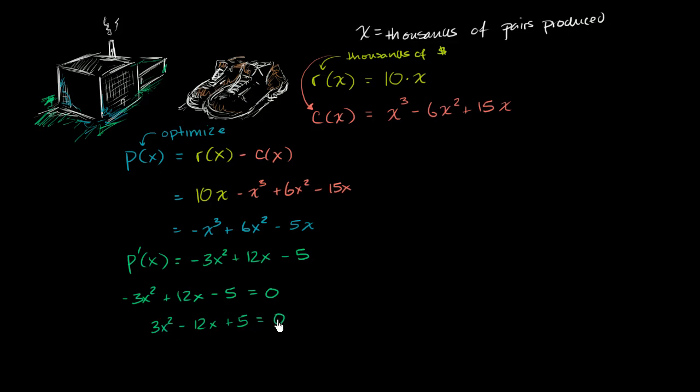And now we can use the quadratic formula to solve for x. So x is going to be equal to negative b, which is 12, plus or minus the square root of b squared, which is 144, minus 4 times a, which is 3, times c, which is 5. All of that over 2a. So 2 times 3 is 6.